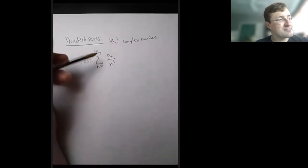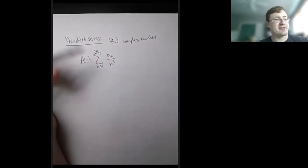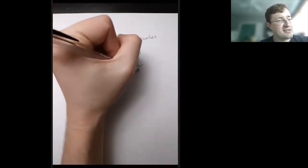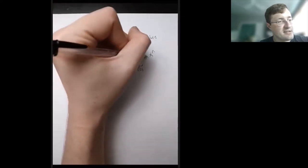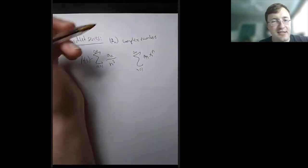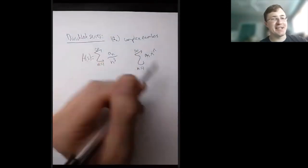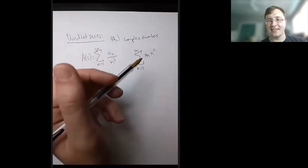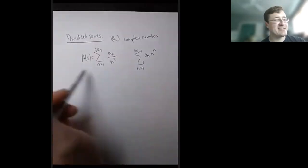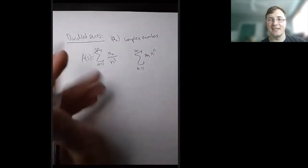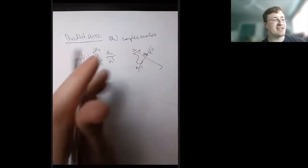Ordinary generating functions have something like a_n times x to the n. Those are useful for combinatorics and counting, and sometimes number theory, but these Dirichlet series are really fundamental to number theory. So ordinary generating functions are not what we're looking at today.